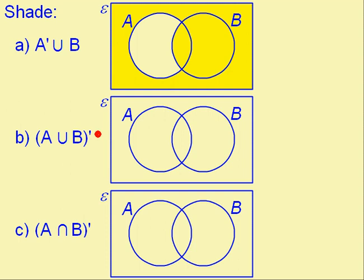For part B, we want the complement of A union B. So, this is everything that's outside of A and B. So, that's this.